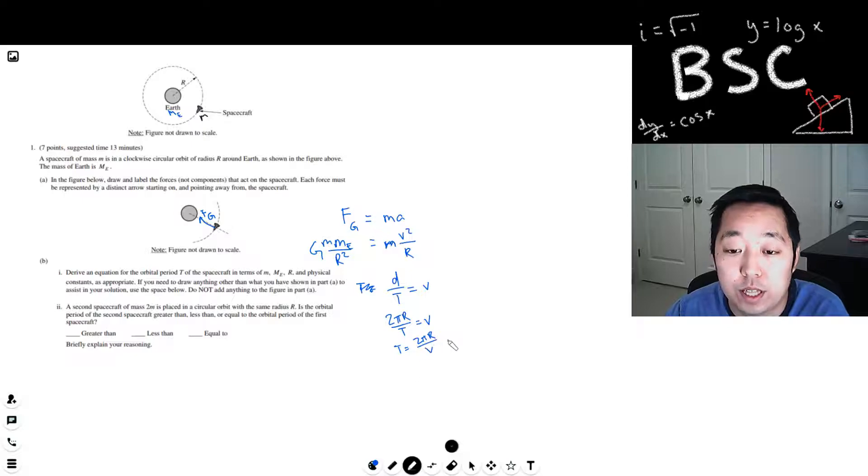So T is equal to 2πR over V, right, by rearranging that. So I just need to get what 2πR over V is. Well I can solve for V using this equation, right? So this would tell me if I multiply by R, this would cancel with that. The m's cancel. So this tells me V is equal to the square root of G mass of the Earth over R, right? And then T is 2πR over V.